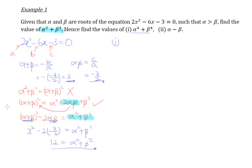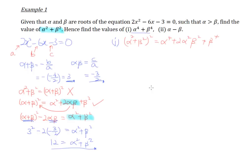Using the same concept and formula, if we take alpha squared plus beta squared and square the whole thing, we get alpha to the power 4 plus 2 alpha squared beta squared plus beta to the power 4. This is exactly the same formula structure as before. Rearranging by shifting the 2 alpha squared beta squared to the left-hand side, we get: alpha squared plus beta squared bracket squared minus 2 alpha squared beta squared equals alpha to the power 4 plus beta to the power 4.